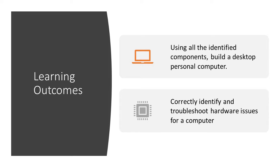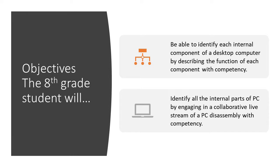And number four, correctly identify and troubleshoot hardware issues for a computer. Throughout this six-week unit, these outcomes are accomplished via the following objectives. The eighth-grade student will be able to identify each internal component of a desktop computer by describing the function of each component with competency. The eighth-grade student will be able to identify all the internal parts of a PC by engaging in a collaborative live stream with a PC disassembly with competency.